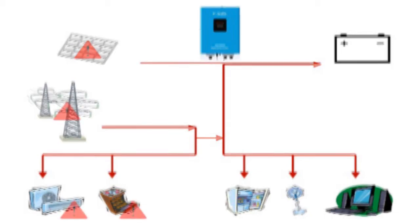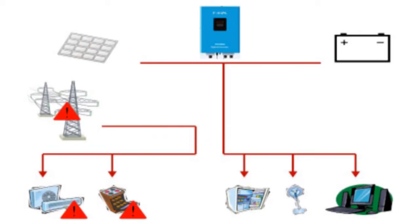If the grid goes down, the inverter will continue to energizing your off-grid loads. However, the inverter will stop energizing your on-grid loads while the grid is down for safety and legal reasons. This feature is called anti-islanding.